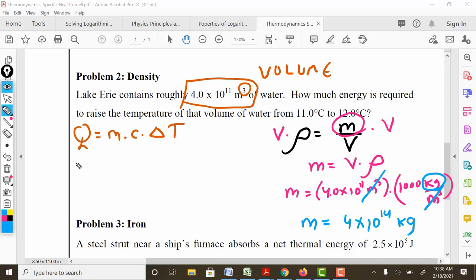So you're going to need to be comfortable with using this scientific notation. Well, we're ready to go ahead and plug things in. The mass is 4 times 10 to the 14 kilograms. The specific heat of water was 4186 joules per kilogram Celsius. And then the temperature difference. Look at this temperature difference. This is ridiculous. We're going from 11 degrees Celsius to 12 degrees Celsius. That's only a one degree. We're trying to heat up this lake by one degree.